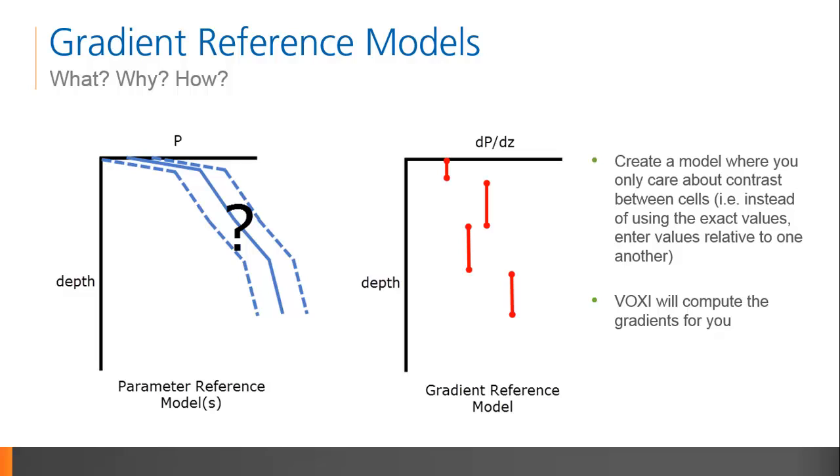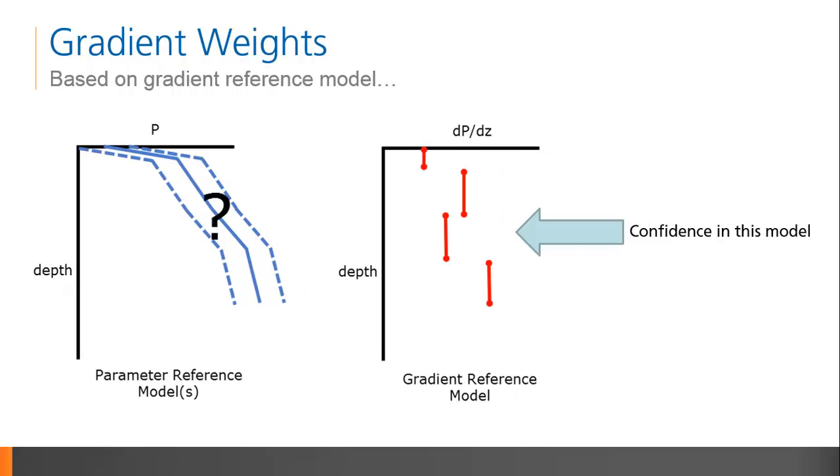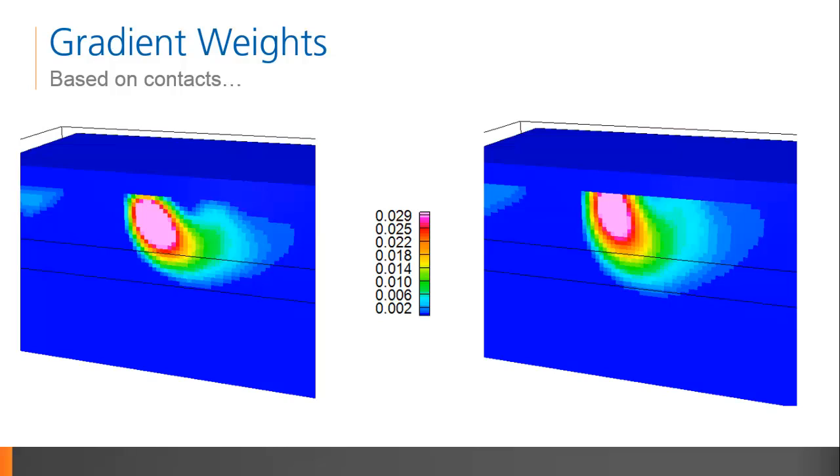Creating your own gradient reference model is a lot like creating a parameter reference model. You can use your wireframes, drill hole data, or simple geometries, but instead of entering exact parameter values, enter them relative to one another. VOXI will compute the gradients in X, Y, and Z for you. The gradient reference model operates in conjunction with weighting models, one for east and west weighting, one for north-south weighting, and finally, one for gradient weighting with depth. And like the parameter weighting constraint, the gradient weighting constraint defines your confidence in the gradient reference model. Two simple examples of how to apply the gradient reference and weighting voxels follow.